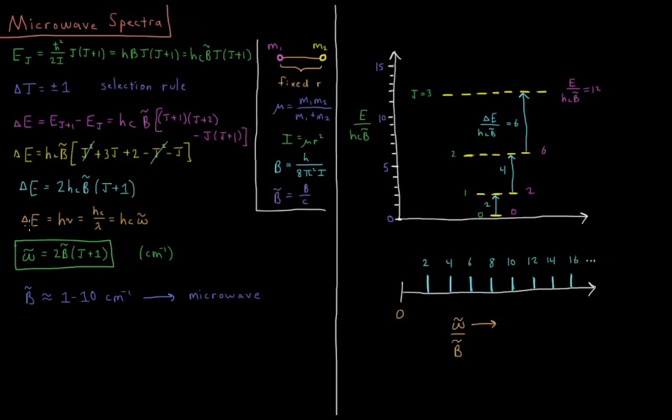Delta e is equal to h nu, it's equal to Planck's constant times the frequency of the photon that we absorb or emit during this jump. That's equal to hc over lambda, the wavelength of it, which is equal to hc omega bar. So it's equal to hc times the inverse wavelength of the photon, the observed inverse wavelength of the photon that we absorb. This is convenient because this inverse wavelength is in units of wavenumbers. This rotational constant is in units of wavenumbers, there's an hc here, and there's an hc there.